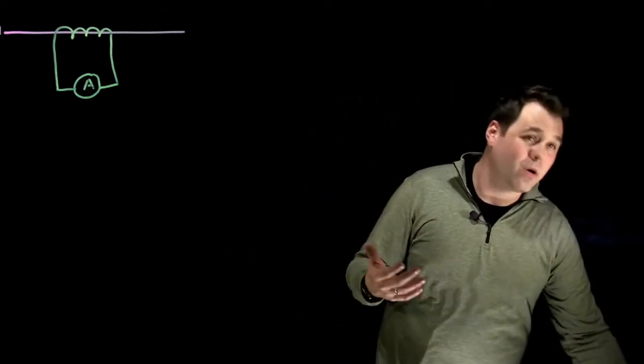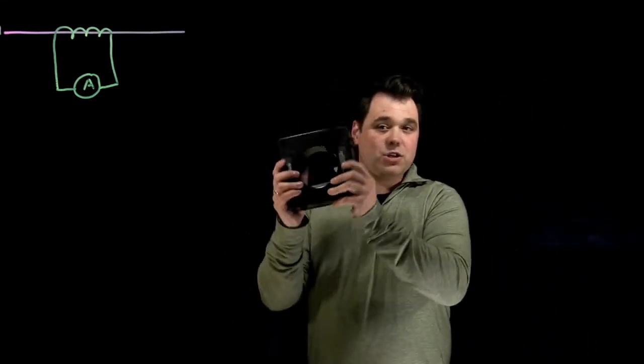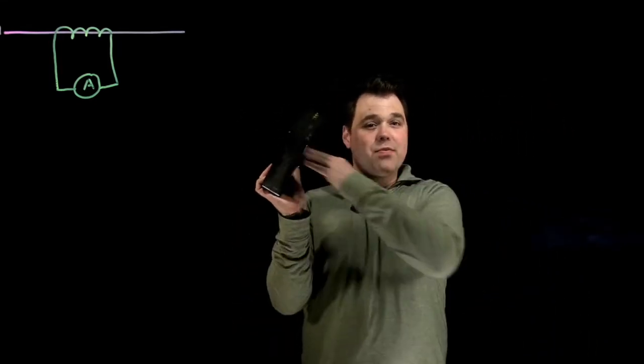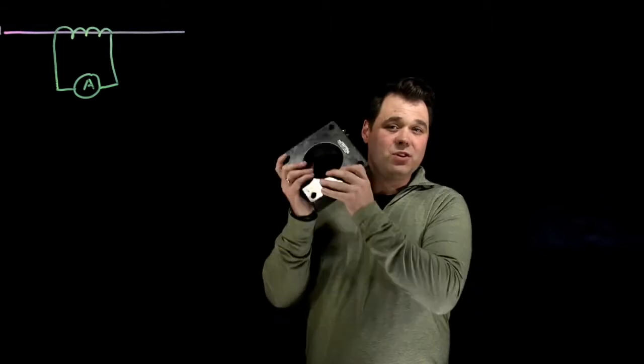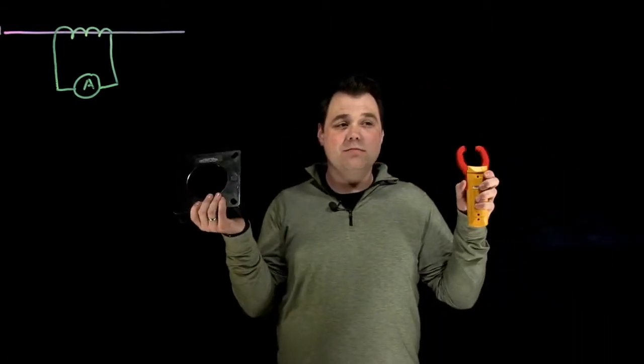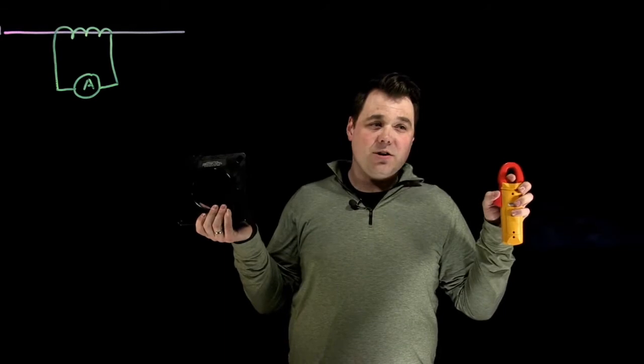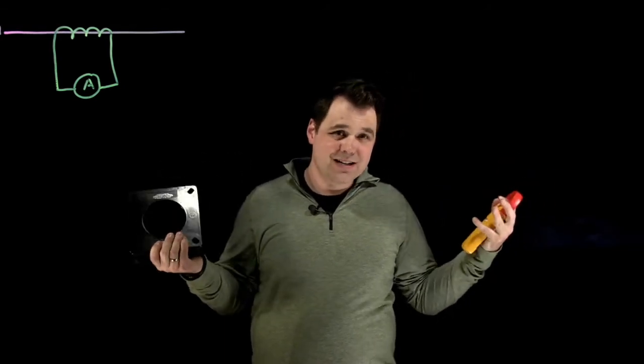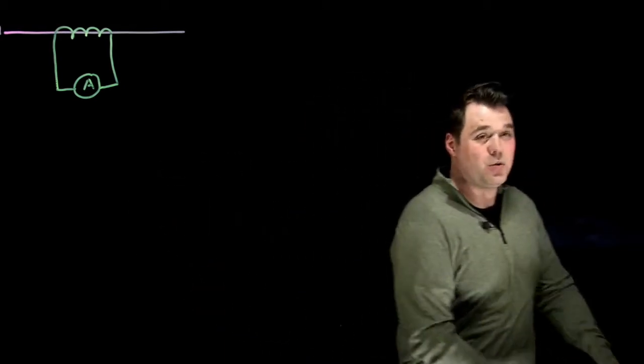There's the toroid type, which is like this, a donut. You run the conductor through, magnetic fields will work, which is also very similar to your clamp-on ammeter. The conductor goes through, current flows, it uses a CT in order to tell you what current is there.